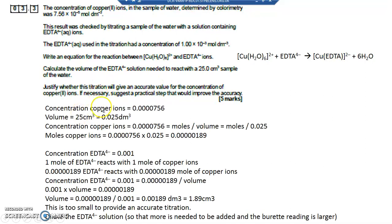So let's have a look at what we need to do. The concentration of copper ions is 0.0000756. The volume of the water sample is 25 cm3. To turn 25 cm3, small units into large units, you need to divide by 1,000. So 25 divided by 1,000 is 0.025.